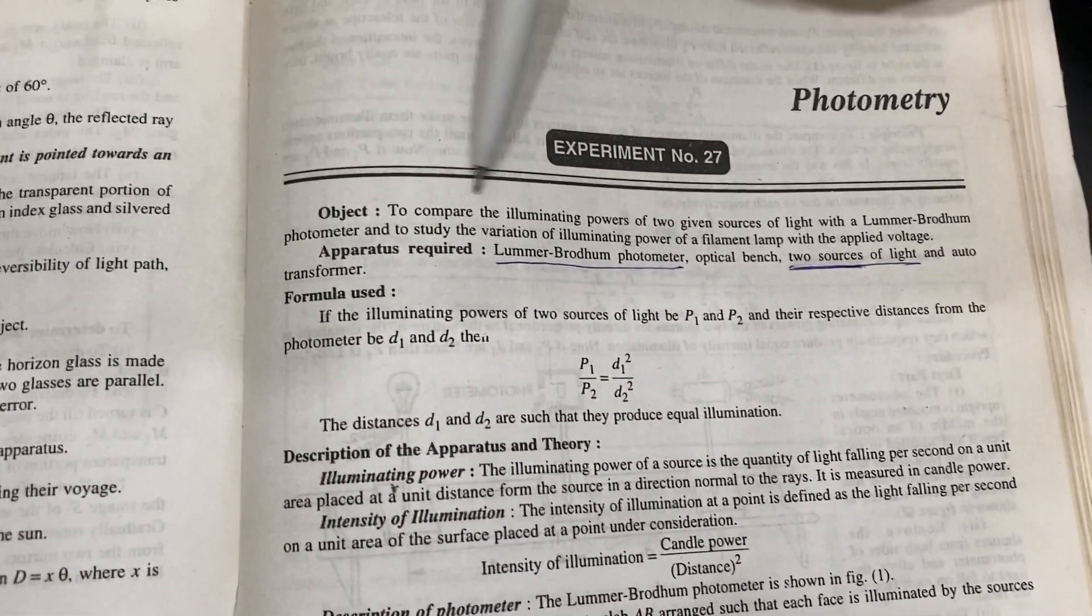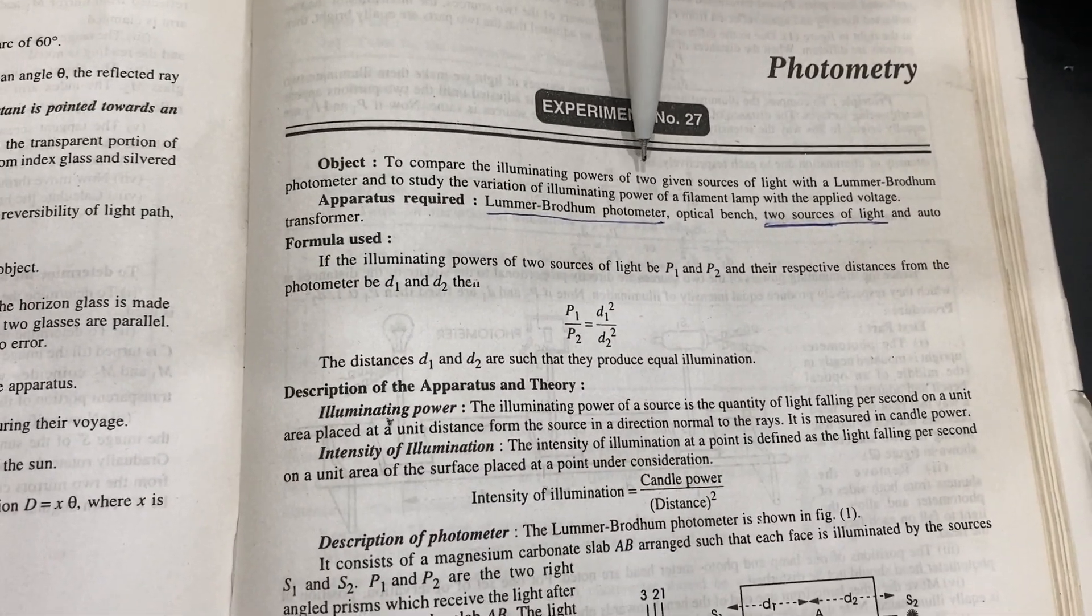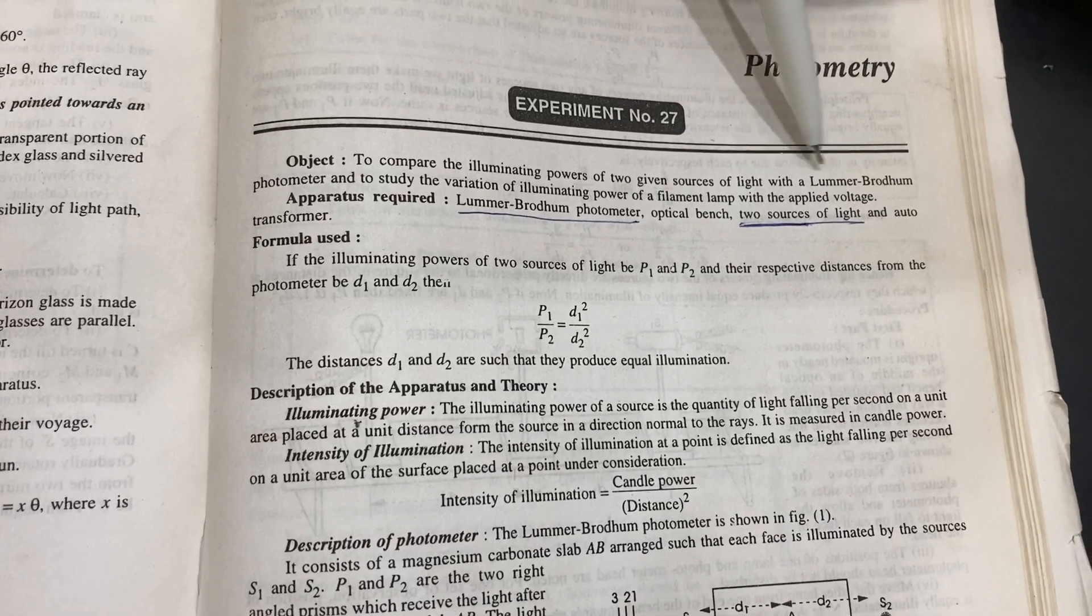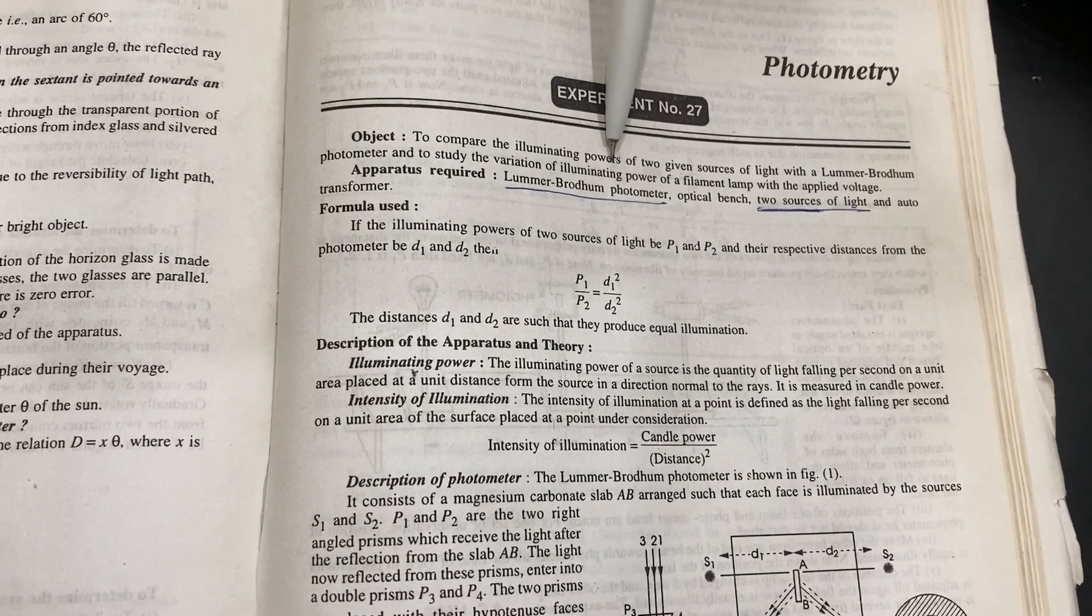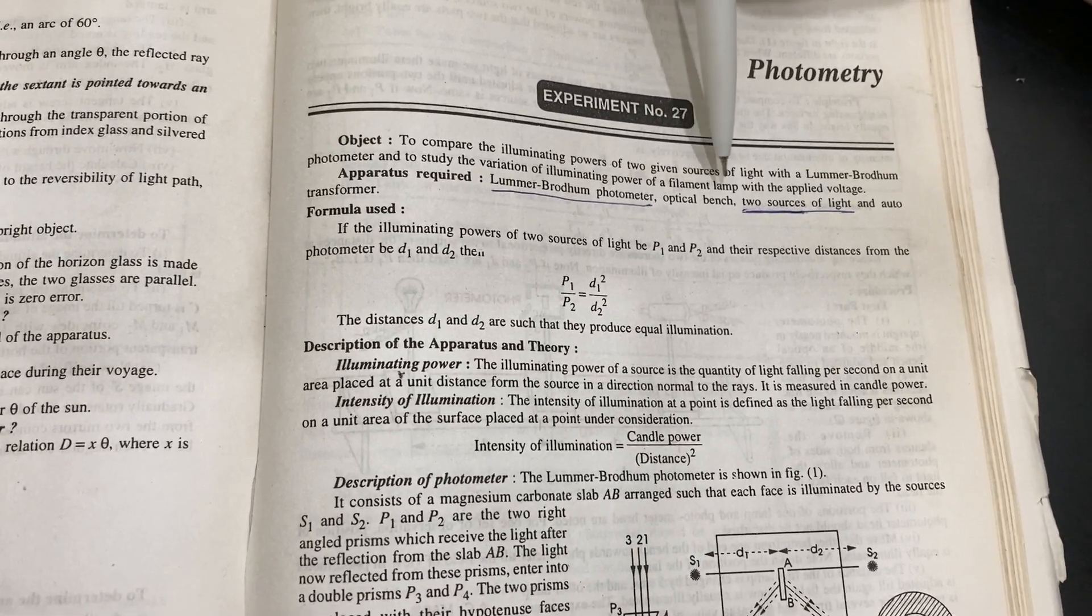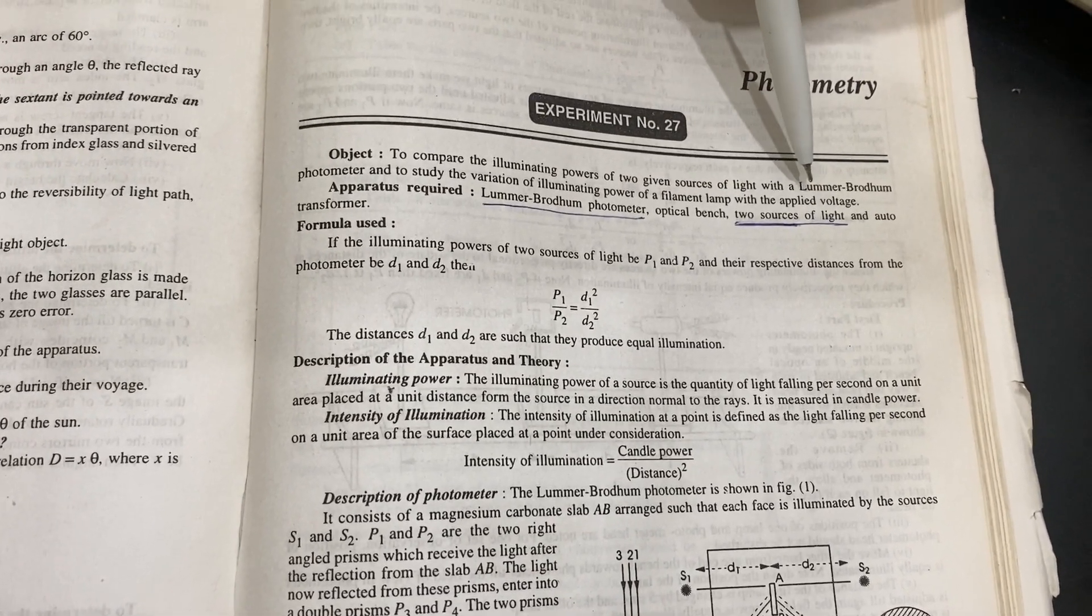First of all, it is to compare the illumination power of two given sources of light, a Lummer-Brodhun Photometer, and study the variation of illumination of a filament lamp with applied voltage.